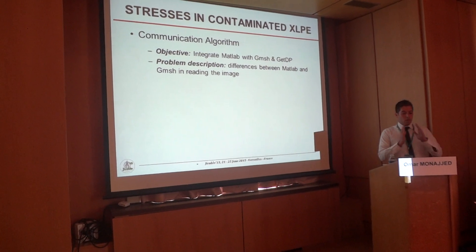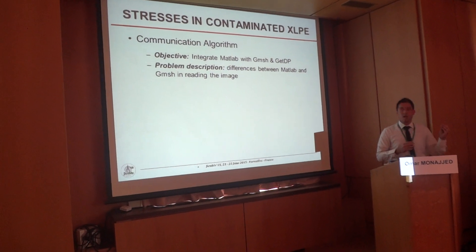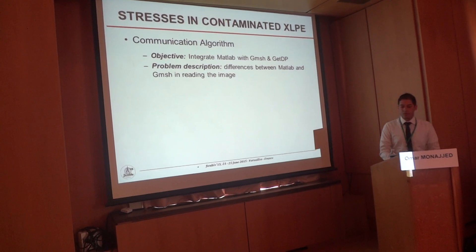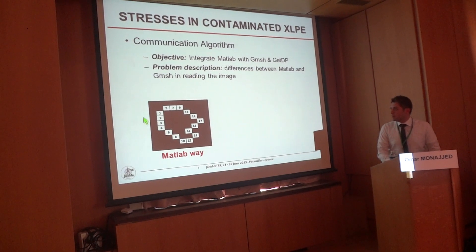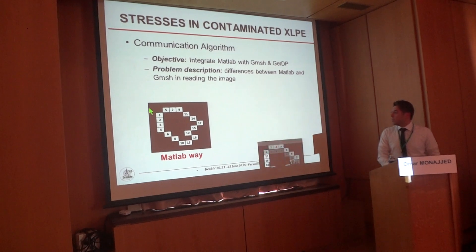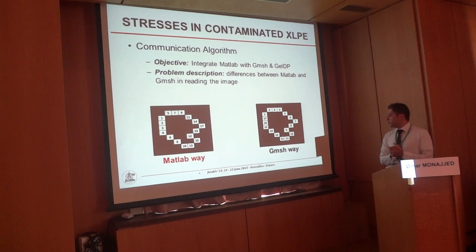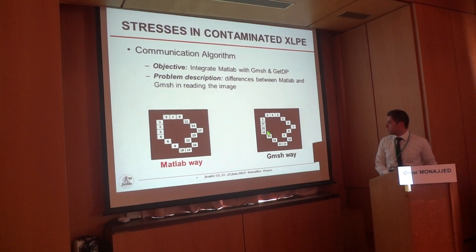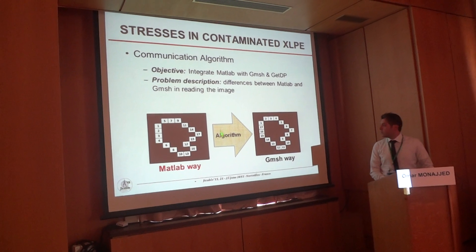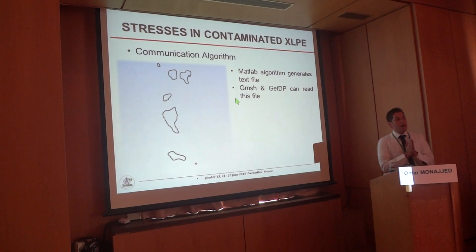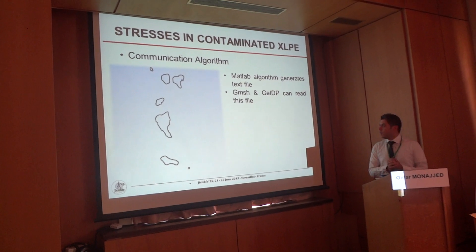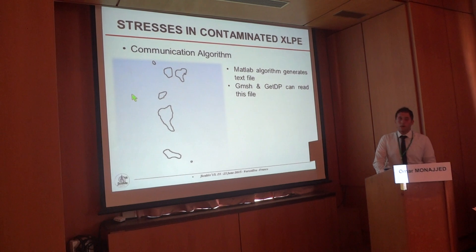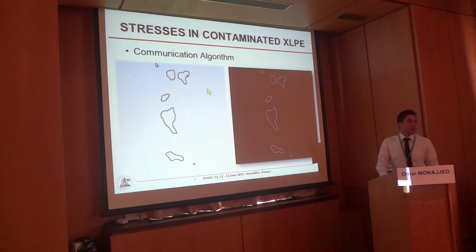For the communication algorithm, the objective is to integrate MATLAB's image processing tool with Gmsh and GetDP simulation tool. The problem is the difference between how MATLAB and Gmsh read the image. MATLAB reads the image column by column, while Gmsh needs the points given in the order they are connected — sequentially around the boundary. This algorithm solves the problem. After running the algorithm, MATLAB generates a text file, which is opened in Gmsh and GetDP. Comparing the result with MATLAB, it is identical, which validates our work.